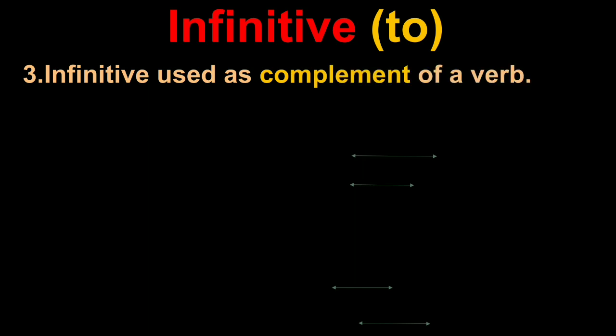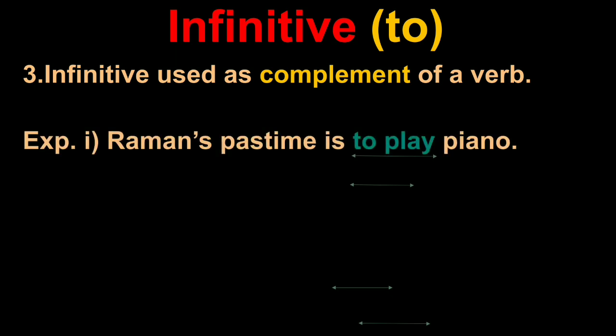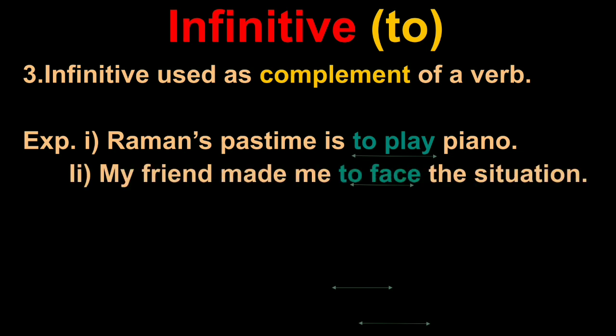Third one is infinitive used as complement of the verb. What is complement? That which completes the sentence. Example: 'Raman's pastime is to play piano.' Raman's pastime is - what is it? It's not complete - to play piano. This works as complement. Another example: 'My friend made me to face the situation' - to face the situation completes it. These two infinitives are treated as complement of the verb.